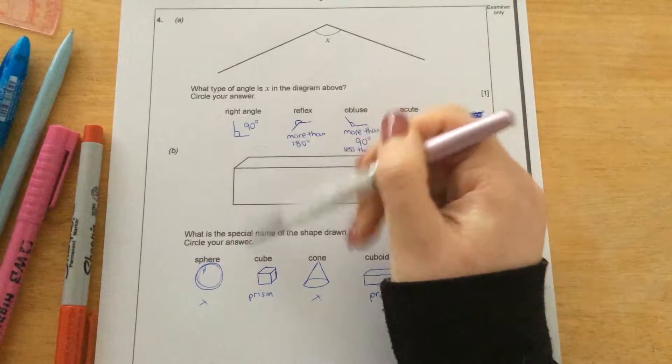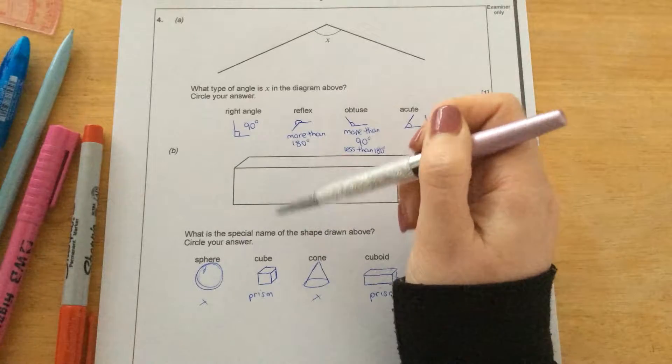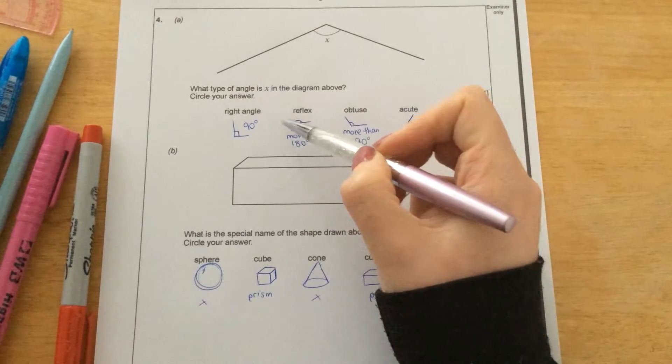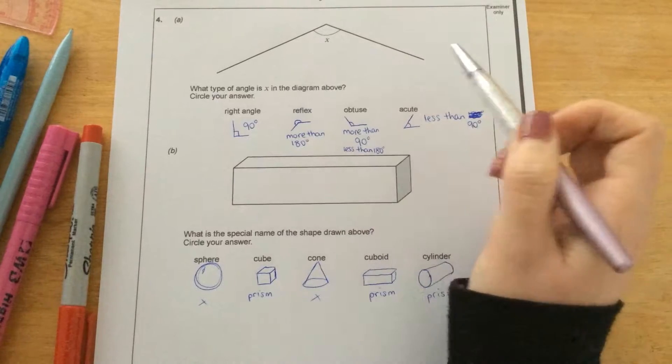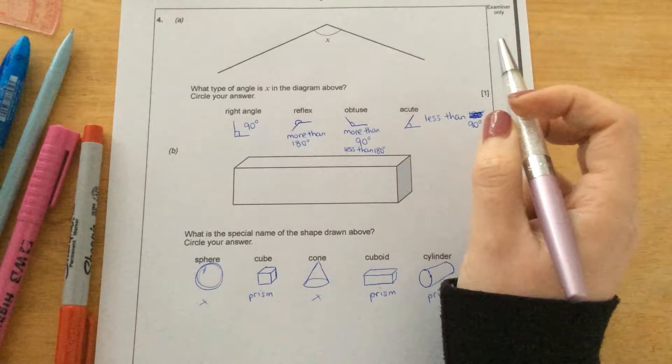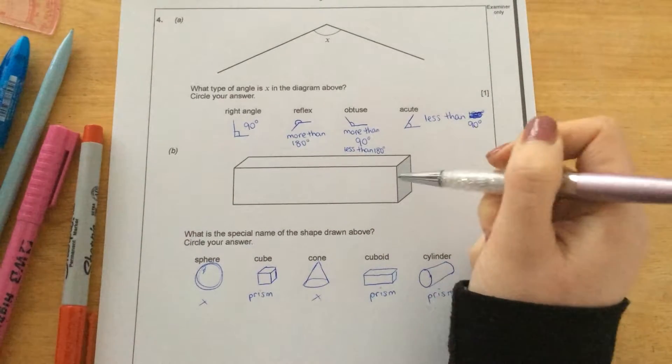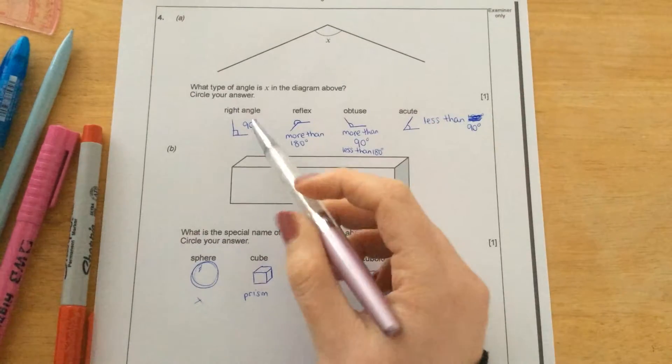So both these questions are multiple choice questions, so even if you have absolutely no clue, make sure you circle something. Because here you've got a 25% chance of getting it correct for one mark. So let's make sure we do know though.